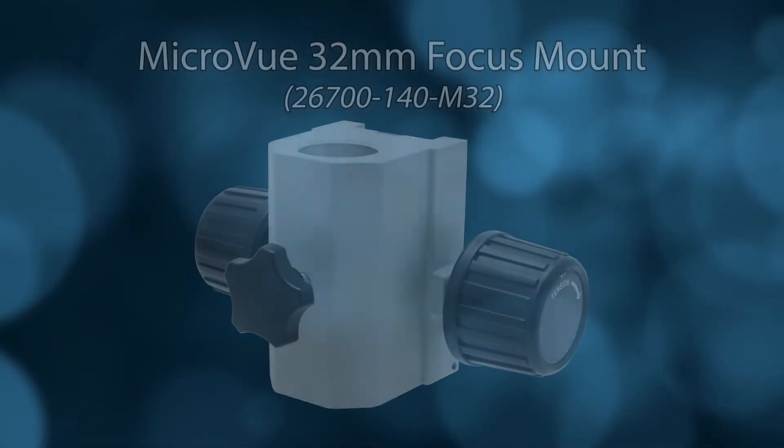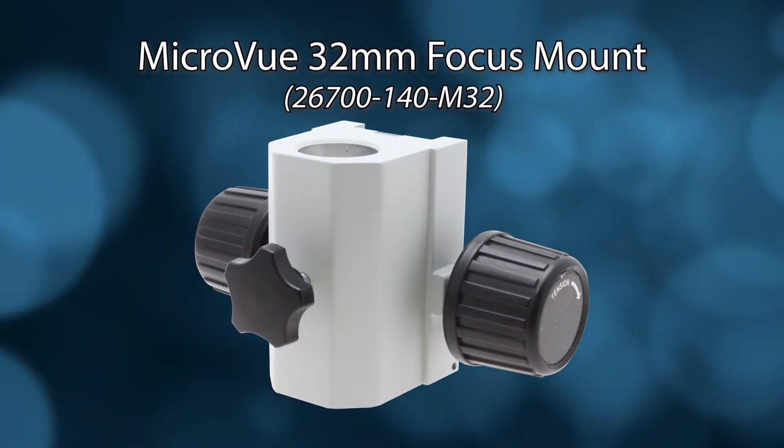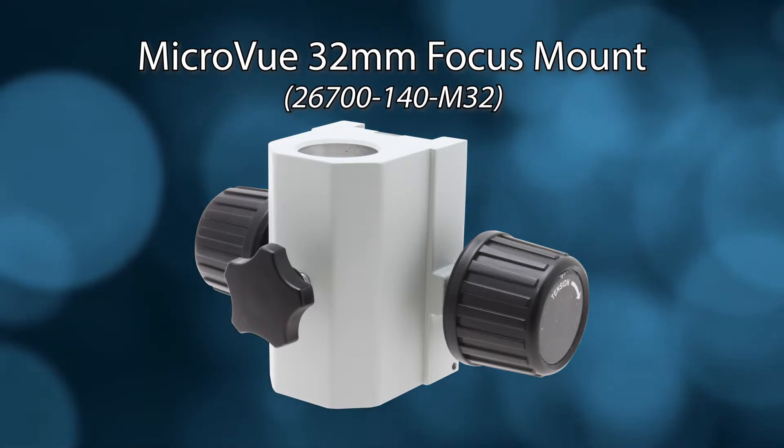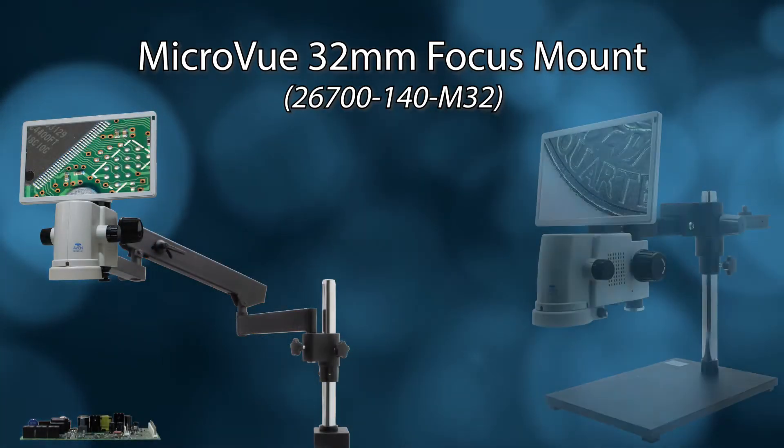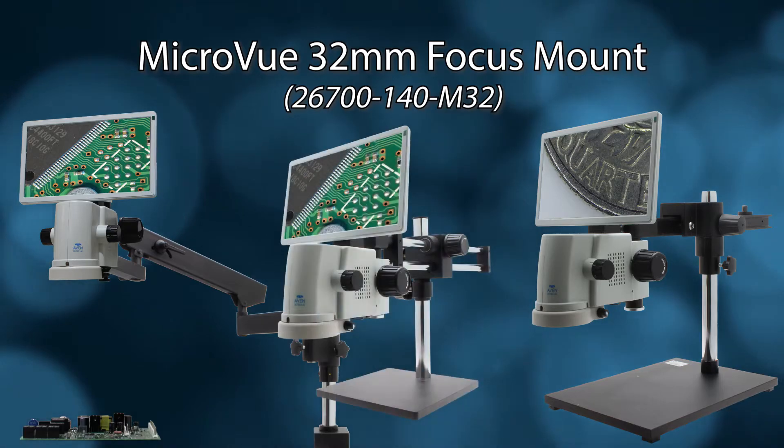And then we have another component which you can buy separately. It is a 32 millimeter focus mount, and it actually comes with an arbor which will make it compatible with all of our double arm boom stands or articulating arm stands.